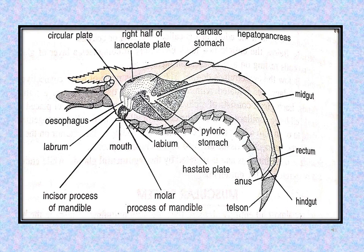The buccal cavity leads to the esophagus. It is a short and wide tube. The wall is folded with four longitudinal folds. Each lateral fold is again subdivided by a groove into two smaller folds. The cuticular lining of the esophagus bears bristles. The esophagus leads to the stomach.